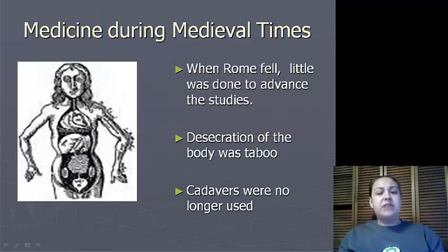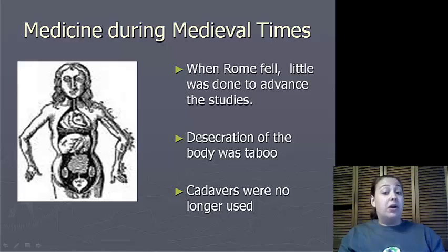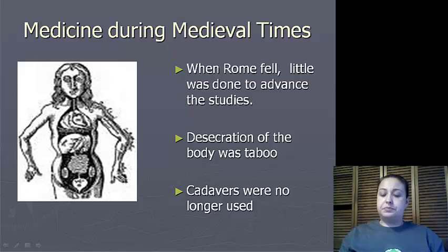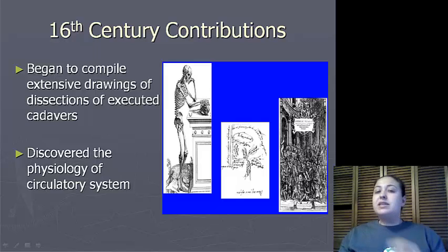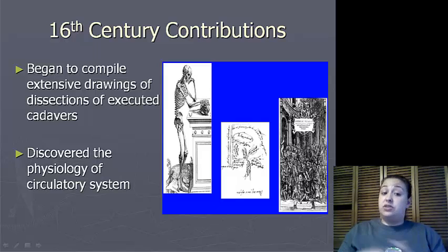During the medieval times when Rome fell, little was done to advance the studies of anatomy and physiology. Desecration of bodies was taboo and cadavers were no longer used in research. Only in the 16th century did we begin to really compile extensive drawings of dissections of executed cadavers and other information.